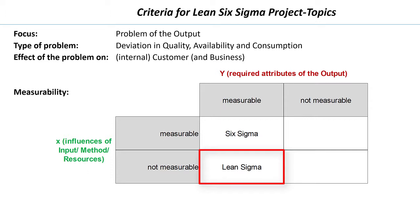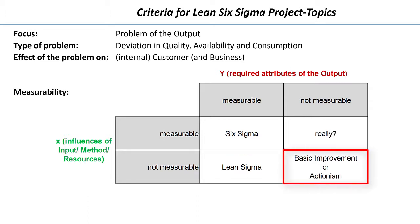In principle, the time losses within the process can often also be measured. However, these time losses often occur at many points in the process and cannot be attributed to a few specific influences, as is often the case with quality problems. It can become very complex to measure these many influences on cycle time, and at least in Germany it is rightly even forbidden to measure the performance of employees. If it is not or cannot be measured at all, then it is a topic for basic improvement — or it is simply actionism.